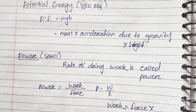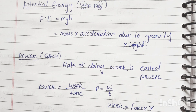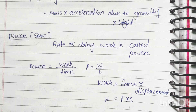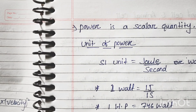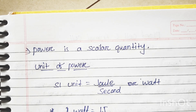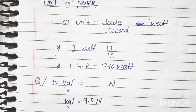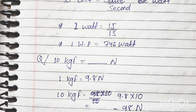Power means the rate of doing work. Work equals force into displacement. Power is a scalar quantity. The unit of power is 1 Joule per second, which is 1 Watt. 1 hp equals 746 Watts. 1 kgf equals 9.8 Newtons.